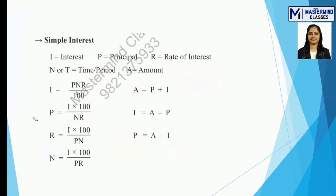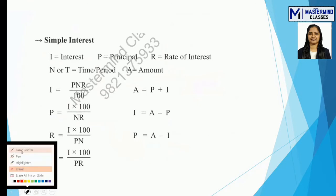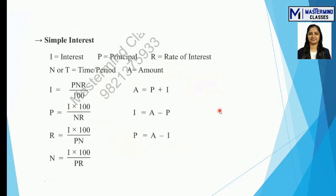P, N, and R are the three elements required. To find P, write NR in the denominator; to find R, write PN; to find N, write PR. There is one more main formula: A = P + I. From this we derive I = A − P and P = A − I.